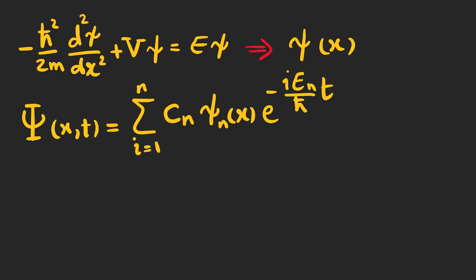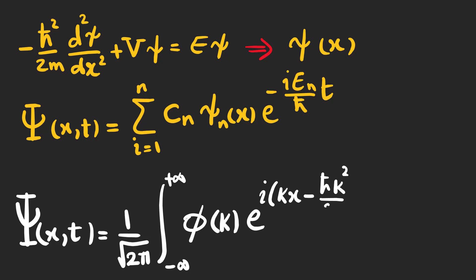And by discrete summation over n, we found an expression for psi of x and t, for which we had to find c_n's. But for this problem, we couldn't find stationary states which are normalizable.